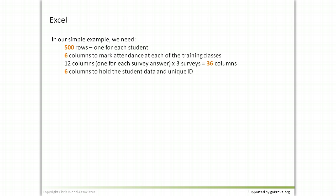Let's take our simple example. We need an Excel data sheet with 500 rows, one row for each student. We'll need six columns to mark the attendance at each of the six training classes. We're going to need 12 columns, one for each answer in the survey, and we're going to run three surveys, so a total of 36 columns. We'll also need six columns to hold the student data and a unique ID. This gives a total of 24,000 data points which we need to collect each year for M&E, and over the five-year programme that is 120,000 cells in one Excel spreadsheet.